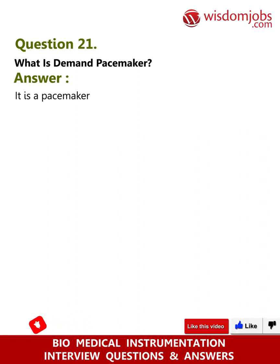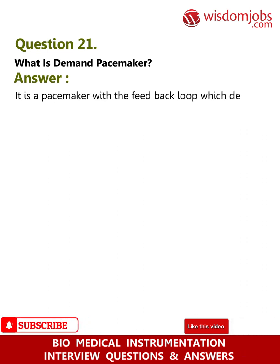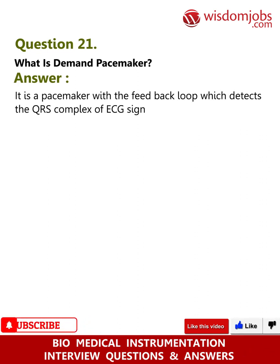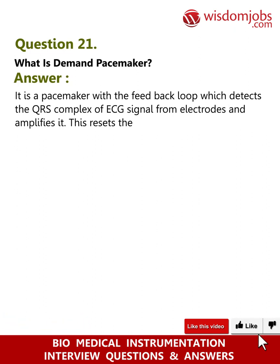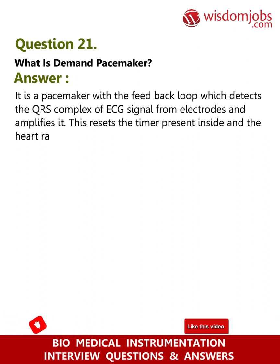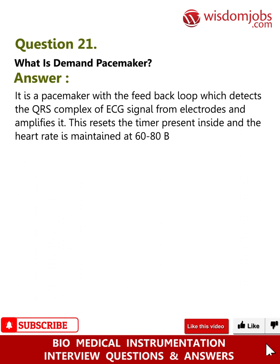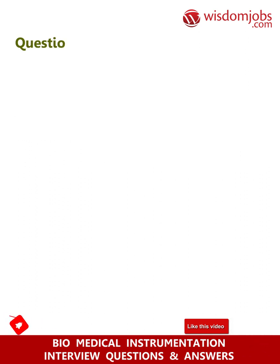Question 21: What is demand pacemaker? Answer: It is a pacemaker with a feedback loop which detects the QRS complex of the ECG signal from electrodes and amplifies it. This resets the timer present inside, and the heart rate is maintained at 60 to 80 BPM.